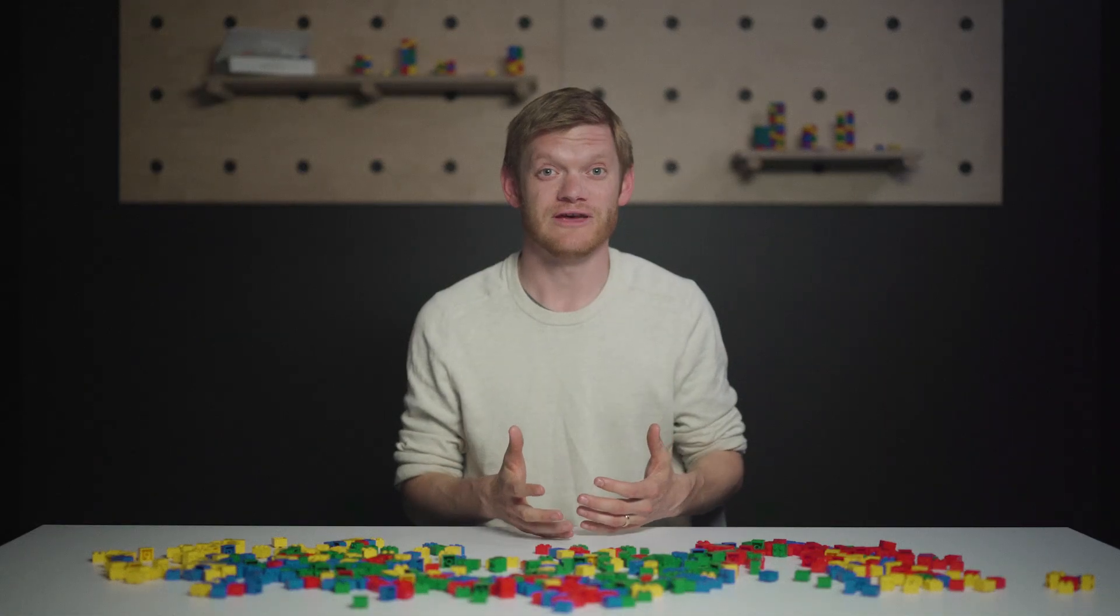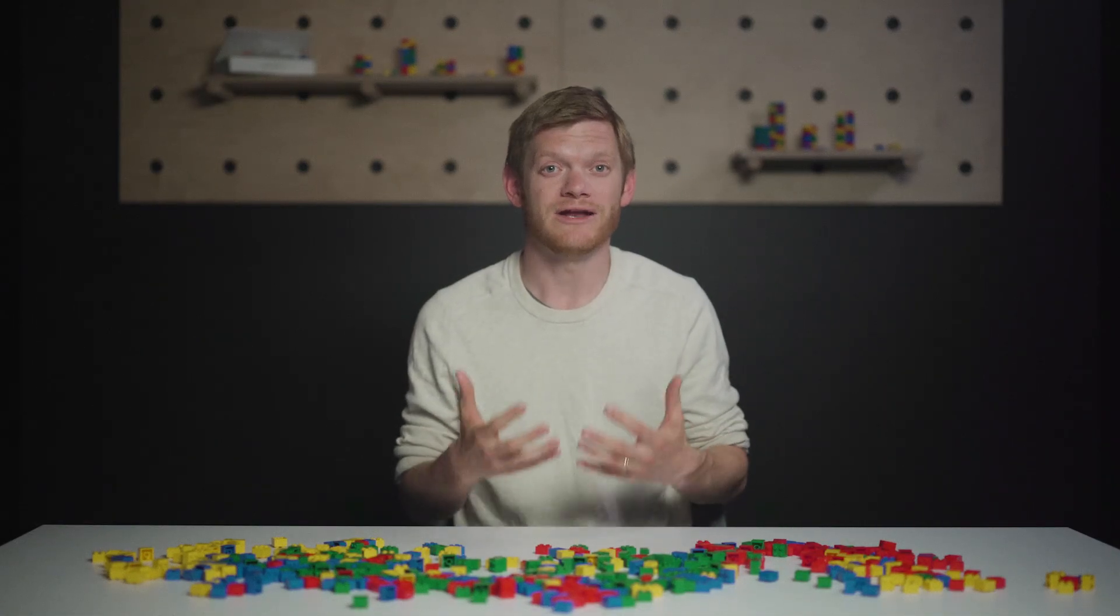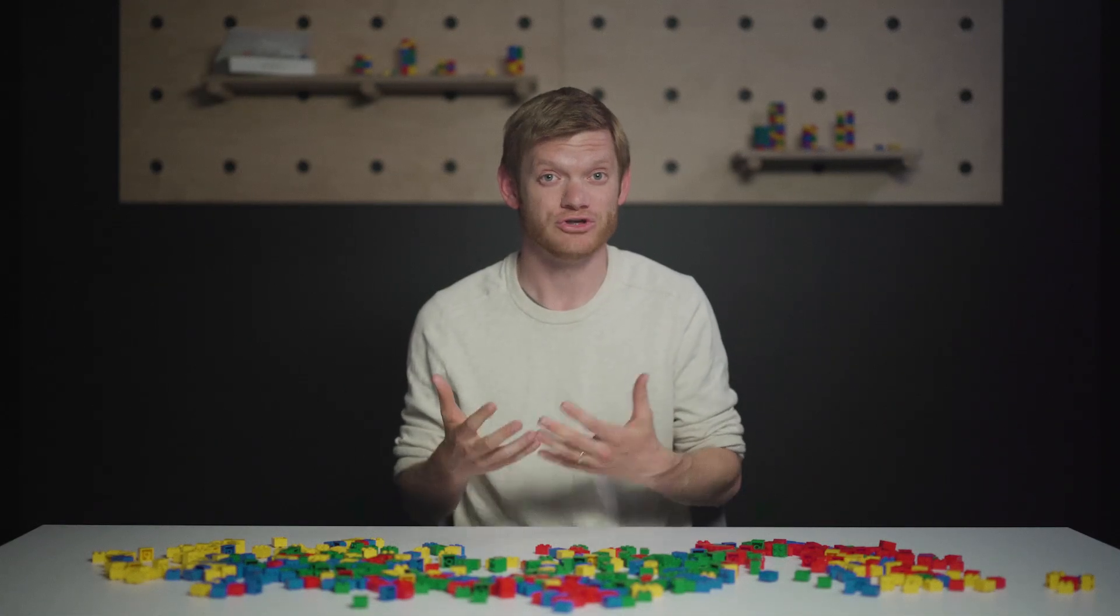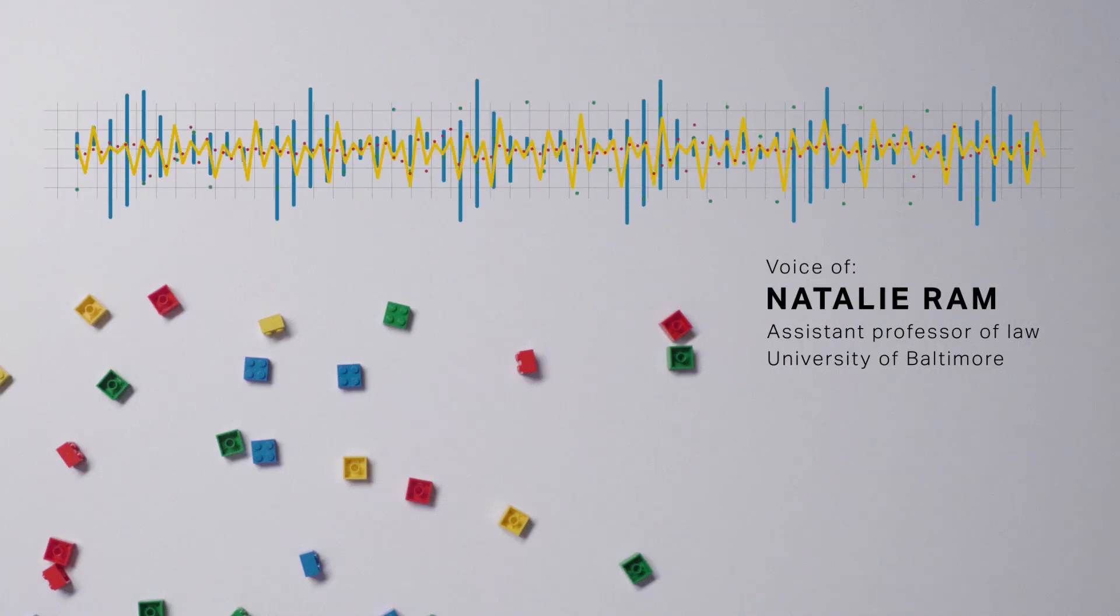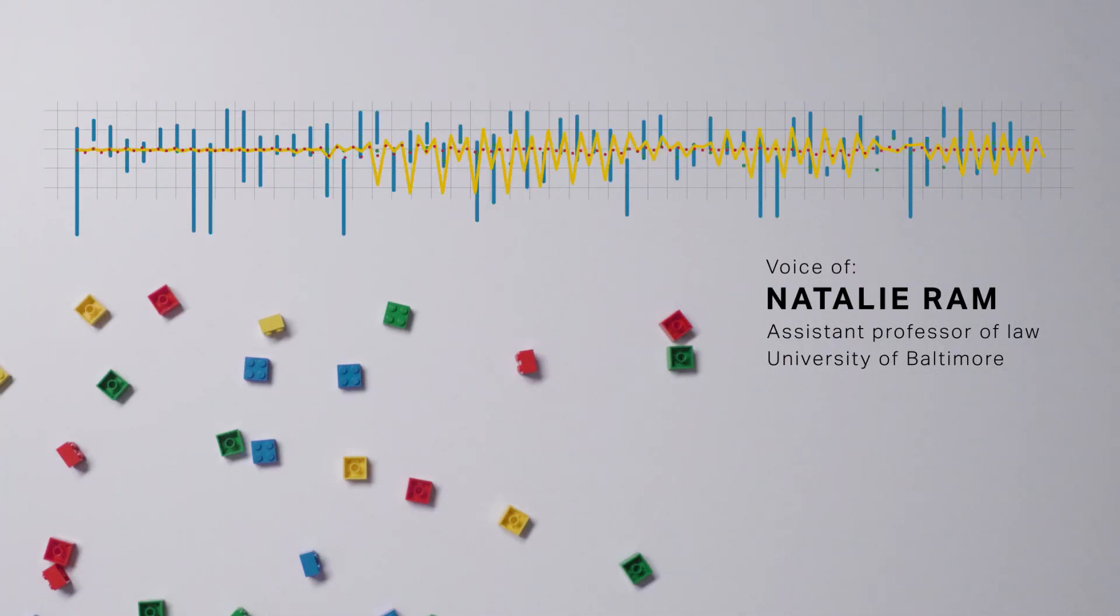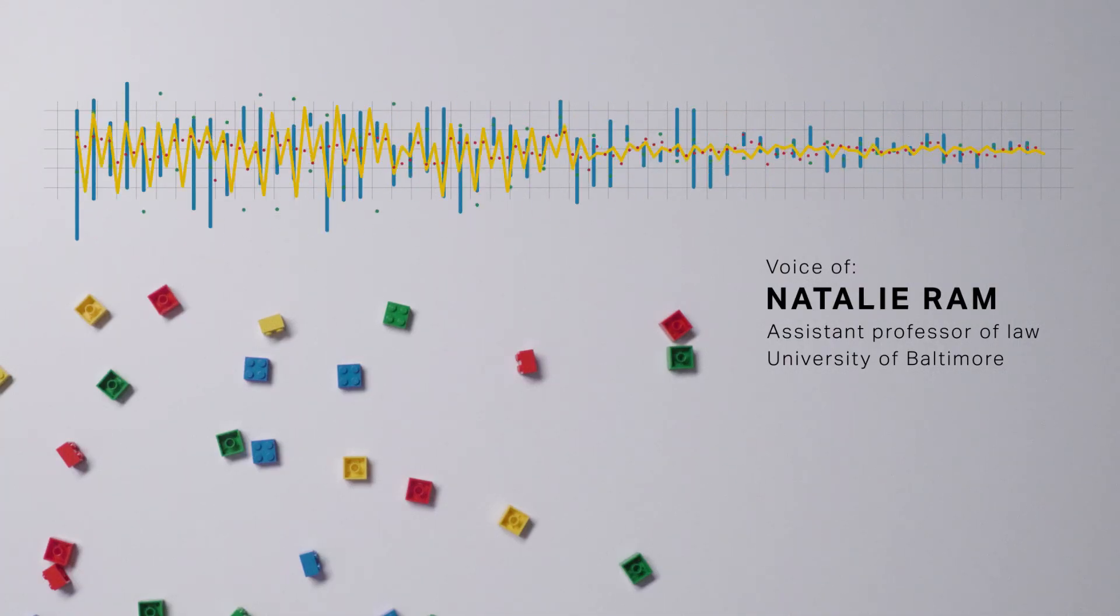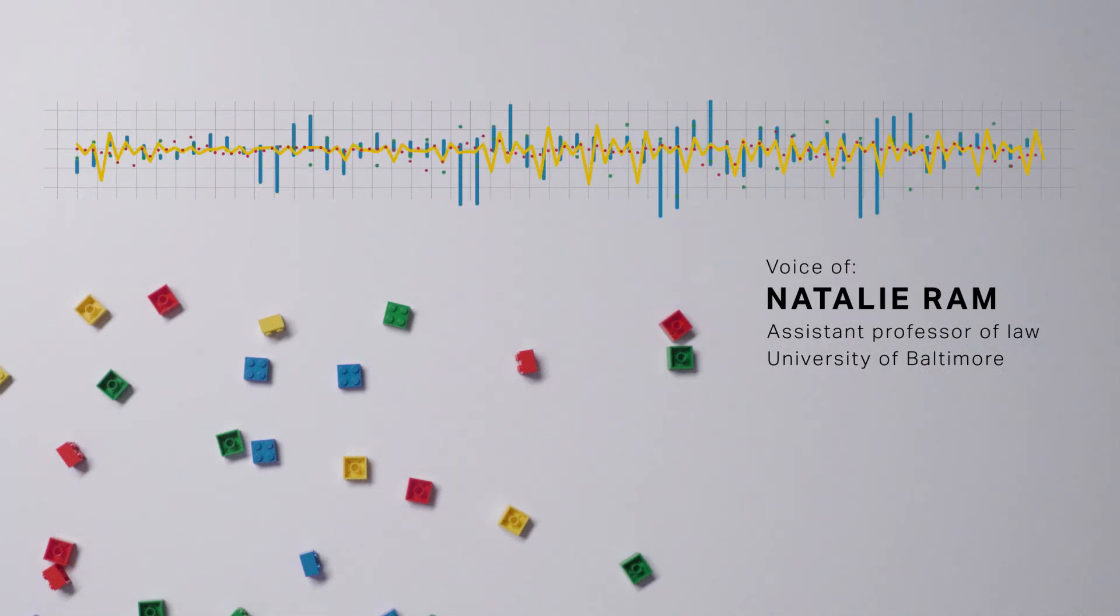So if free databases get diverse enough, everyone in America could be findable via their genes. Which means DNA just won't be anonymous anymore. The bottom line here is that we are rapidly approaching a place where we have a de facto national DNA database.